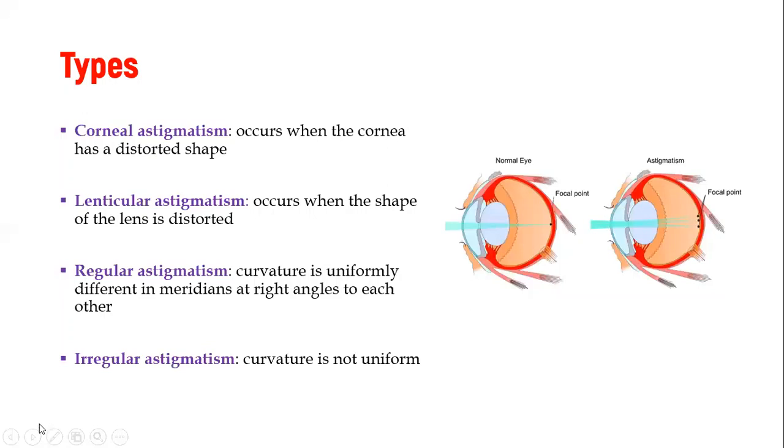So we can have different types, and I've already mentioned some if you are paying attention. So we can have a problem with the cornea, and we have corneal astigmatism. So this is when the cornea, the curvature of the cornea is not as smooth as it is supposed to be. So you find that it is not as uniform or it is a bit rugged. Therefore, the bending of light would not happen appropriately or to one focal point.